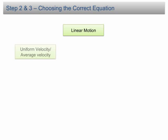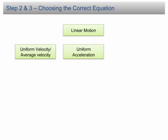There are three types of motion. Motion at uniform velocity or you are asked to find the average velocity. Motion at uniform acceleration. Motion at changing acceleration.